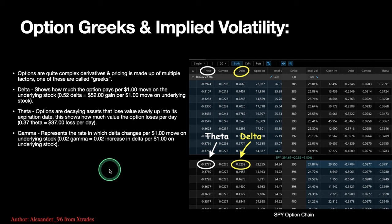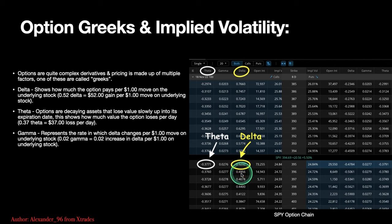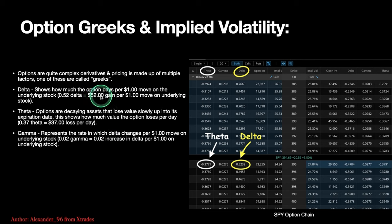Gamma represents the rate at which the delta changes per $1 move on the underlying stock. With a 0.02 gamma, that equals a 0.02 increase in delta per $1 move. So if you have 0.02 gamma at $3.95 and the stock price goes up $1 to $3.96, your delta changes — turning from 0.52 into a 0.54. Your delta is showing how much the option pays per $1 move, so that $52 would become about $54 as delta changes with gamma.